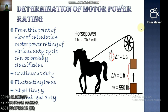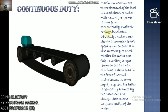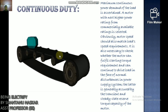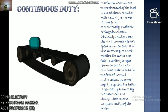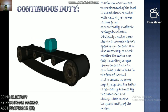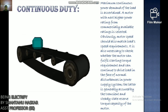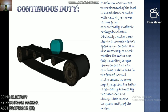Now we discuss determination of motor power rating. For various duty cycles, ratings can be broadly classified as: continuous duty, fluctuating load, and short time intermittent duty. For continuous duty, the maximum continuous power demand of the load is found and the next higher commercially available power rating motor is selected. Motor speed must match load speed, and it must fulfill starting torque requirements and withstand normal disturbances in power supply, ensured by transient and steady state reserve torque capacity.